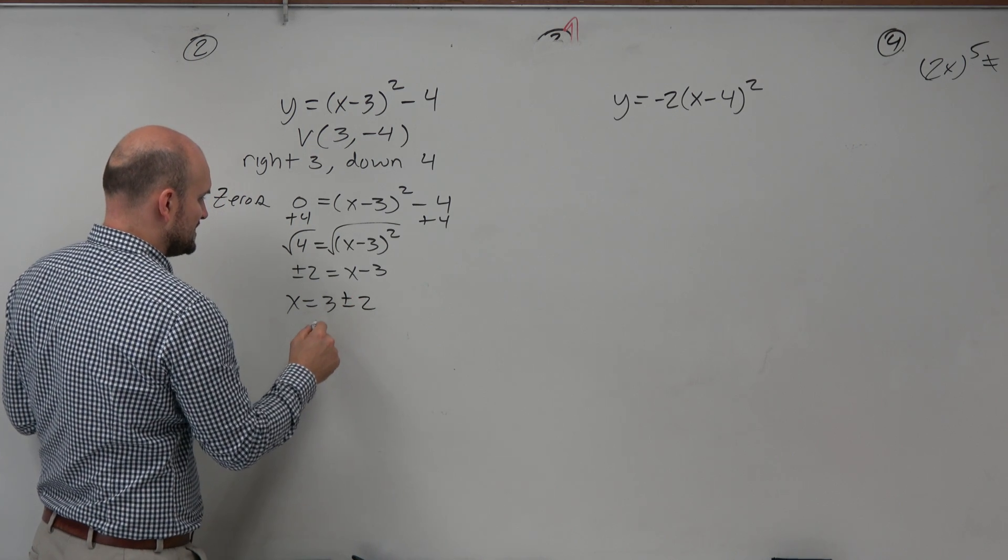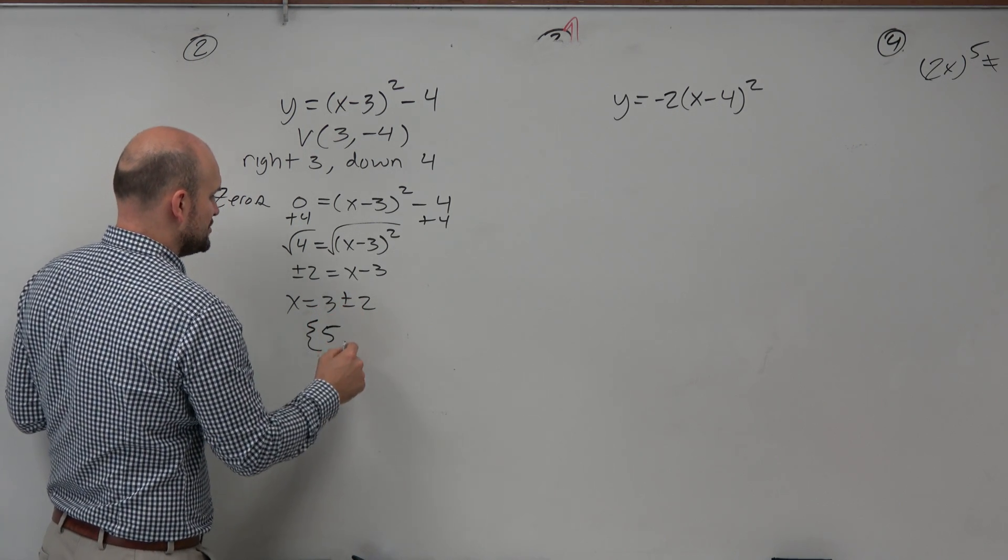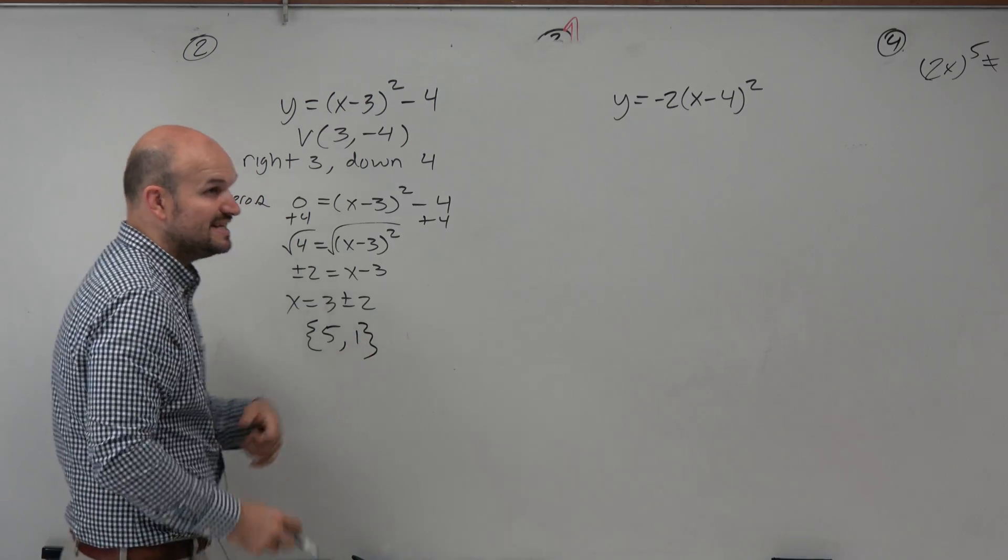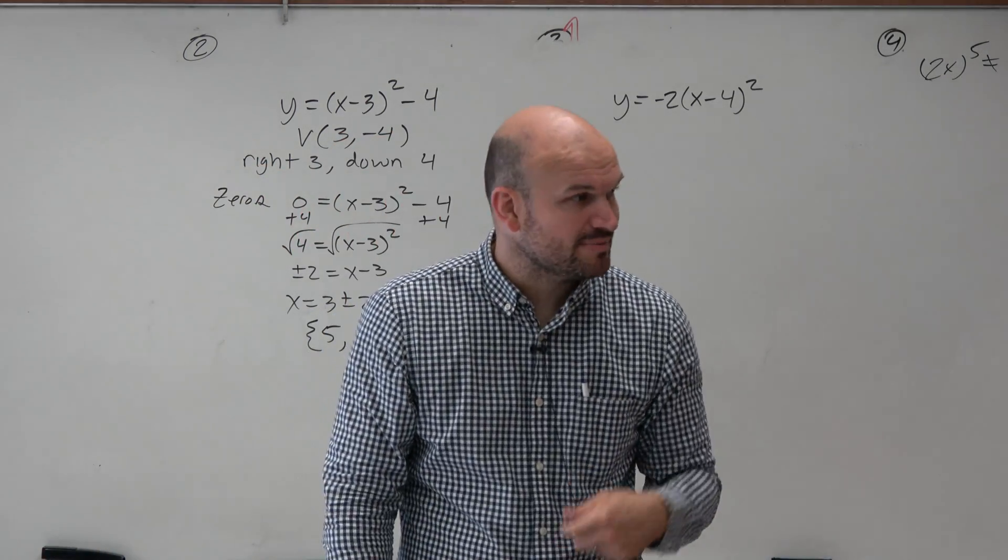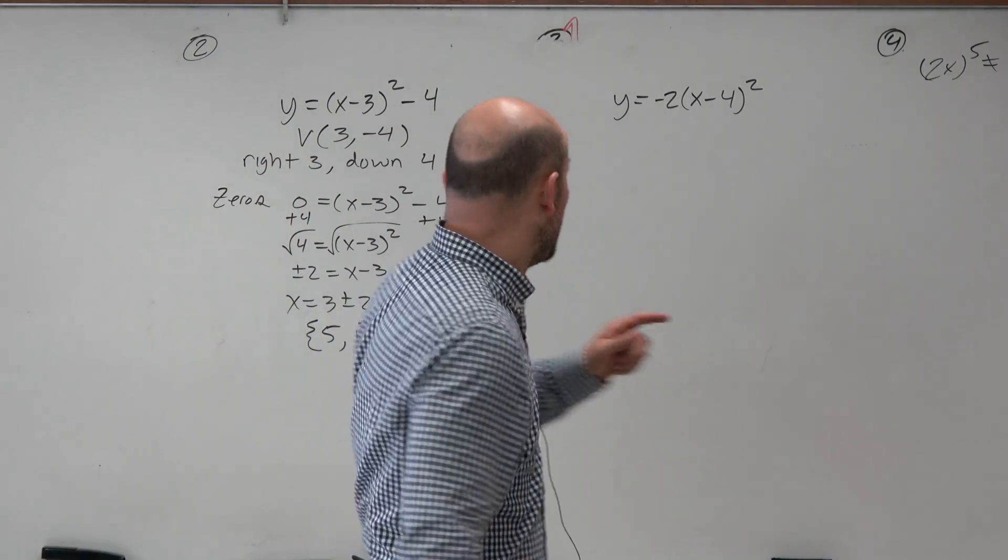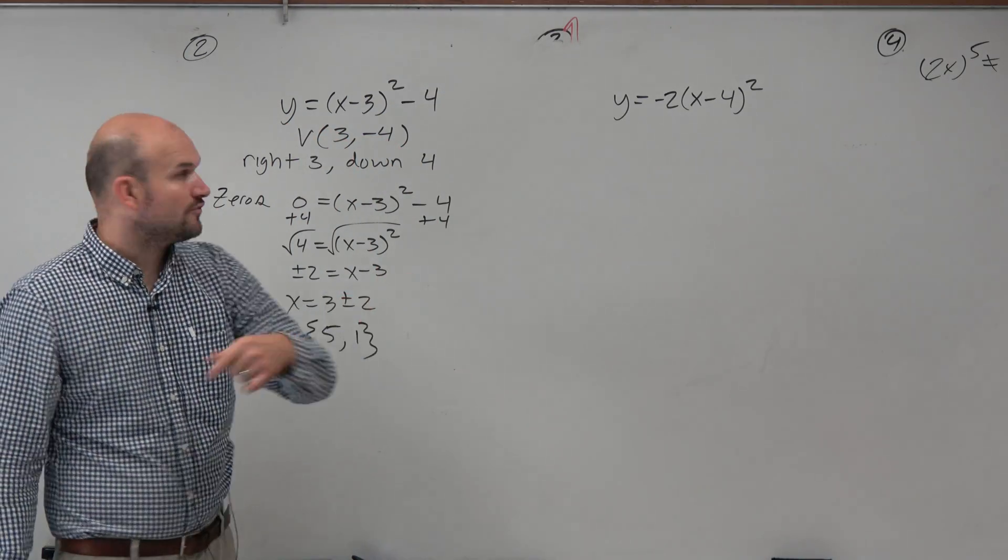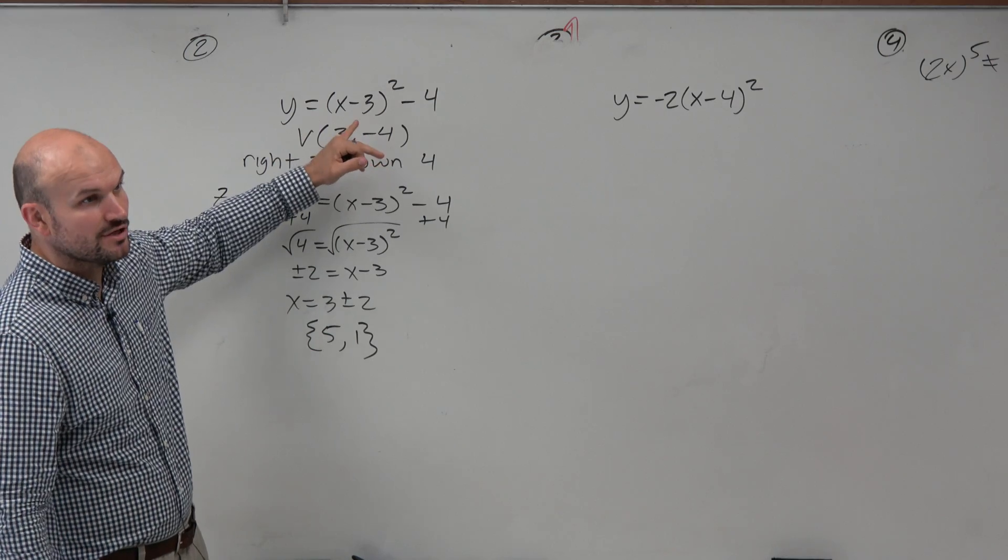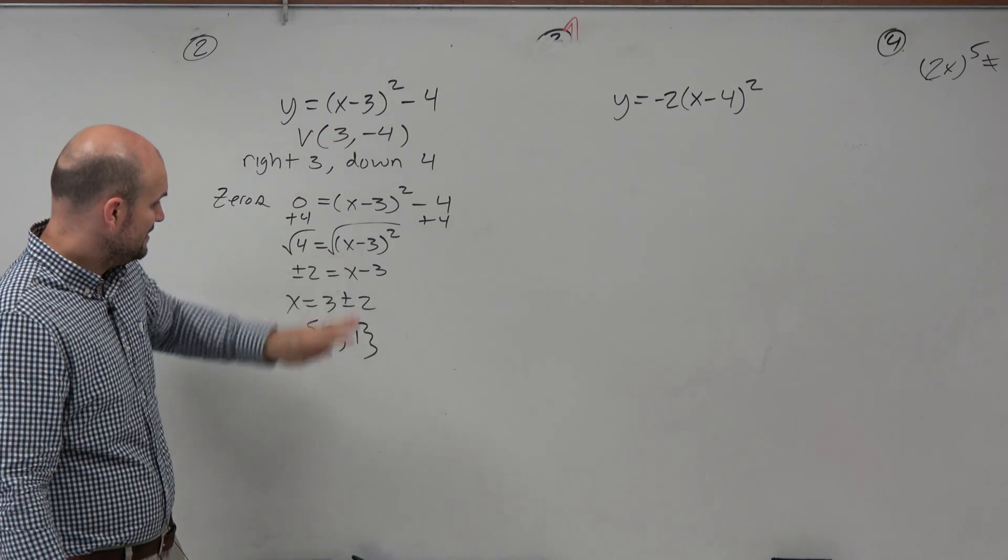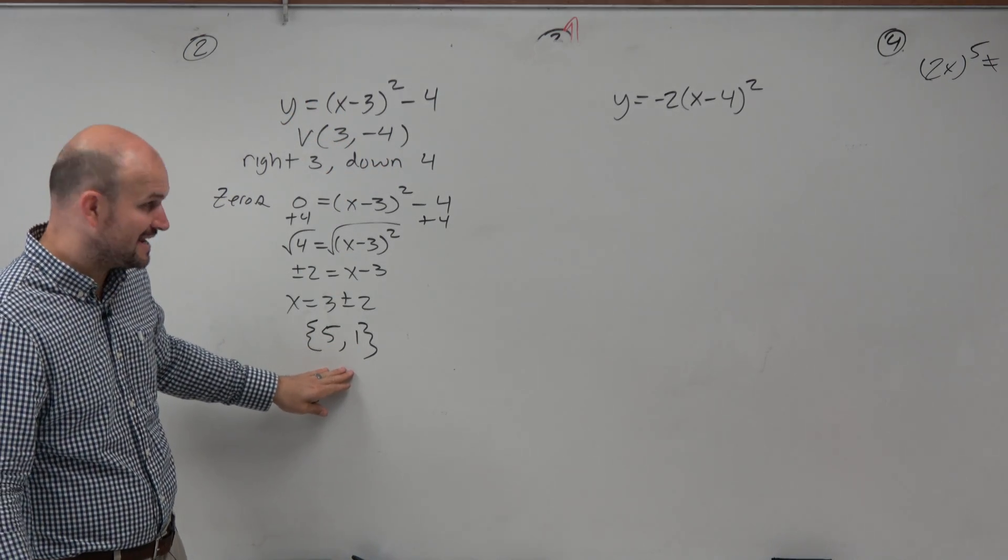I'm going to use interval notation. 3 plus 2 is 5, and 3 minus 2 is 1. So the real zeros in this problem are 5 and 1. It's not 3. Don't get confused with linear factorization form and say, oh, the zero is 3 with the multiplicity of 2. No, the zeros or the x-intercepts in this case are 5 and 1.